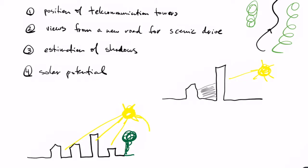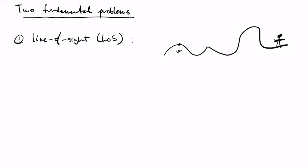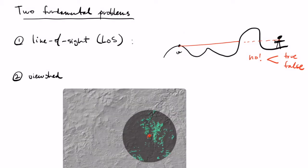In this lesson we address two fundamental problems related to visibility queries. The first is the line of sight: given a viewpoint V and another point Q, does V see Q and does Q see V? This is done by checking if the line segment VQ intersects the terrain, returning true or false. The second is the view shed: given a viewpoint, which parts of the surrounding terrain are visible? The result is a potentially disconnected polygon showing the location and extent of what is visible from V.